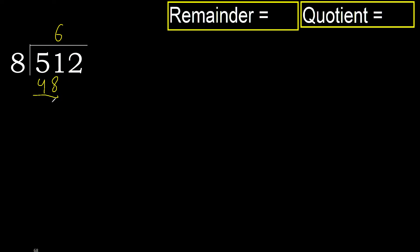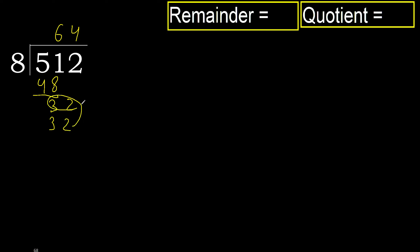Subtract. Next. 32. 8 multiplied by 5 is greater. Multiplied by 4, 32 is not greater.